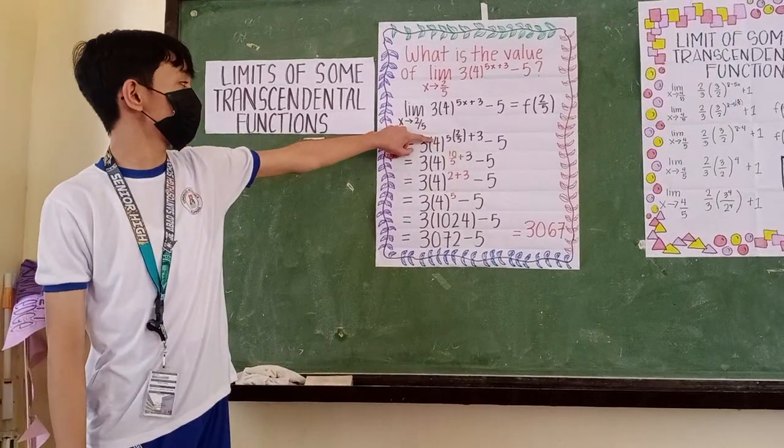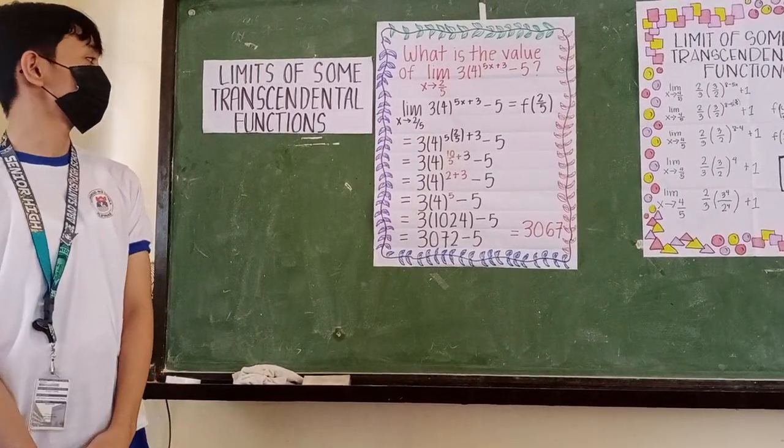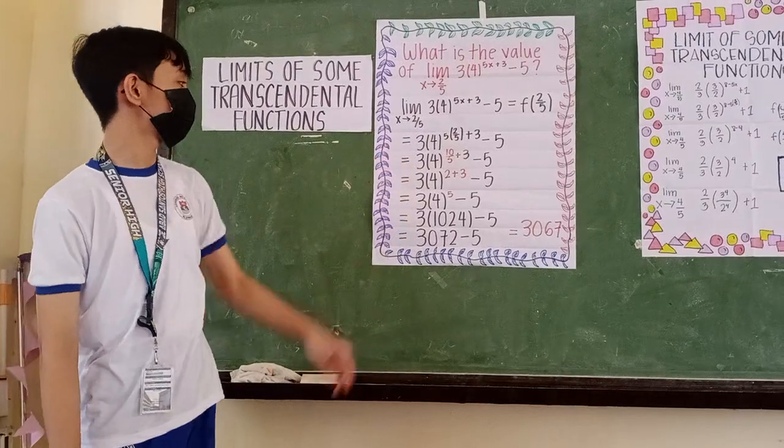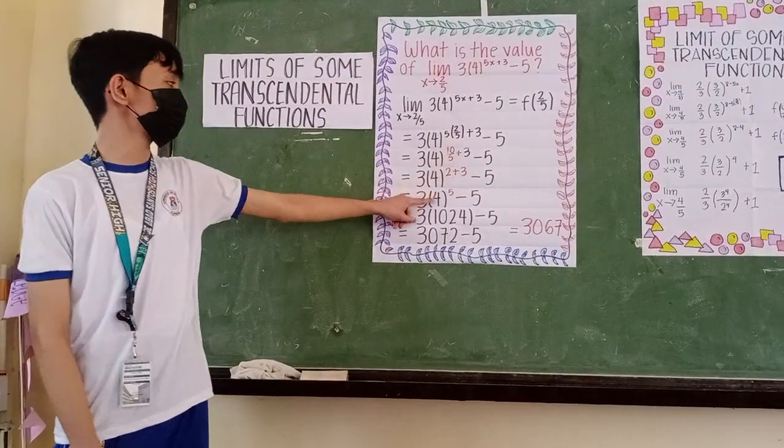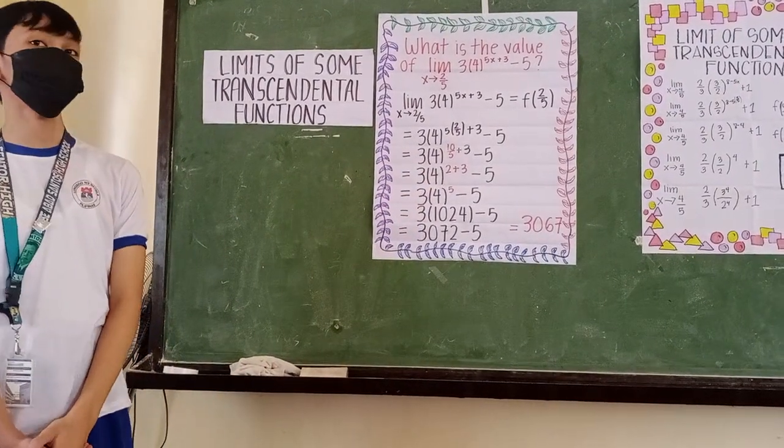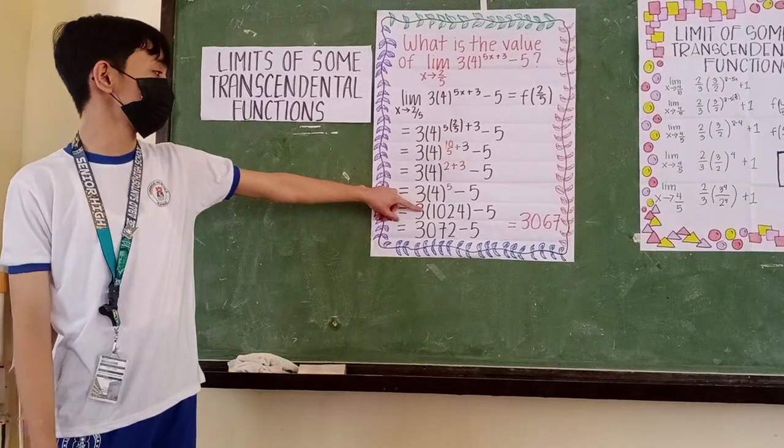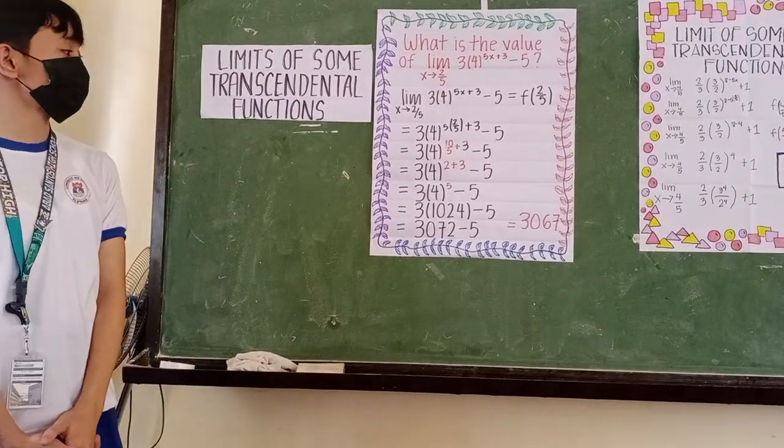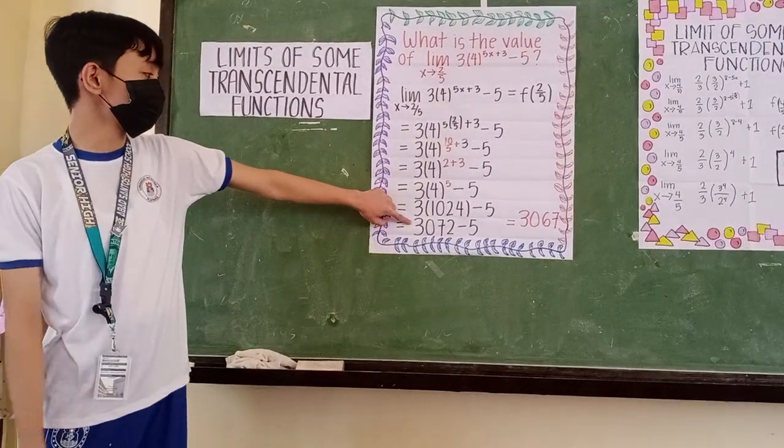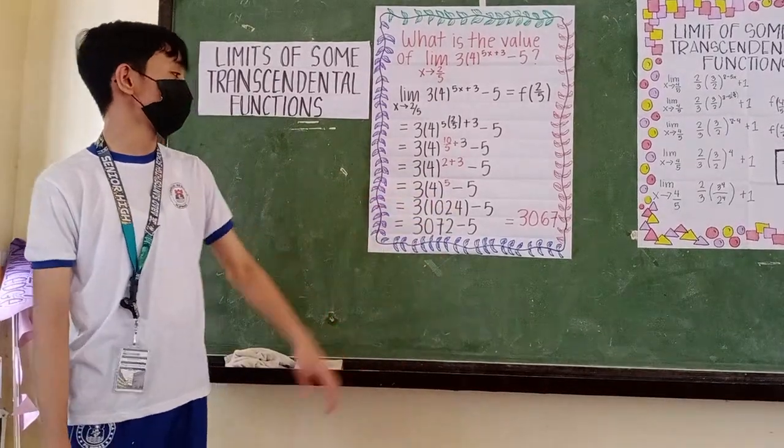5 times 2 over 5 is equal to 10 over 5 or equal to 2. 2 plus 3 is equal to 5. 4 raised to 5 is equal to 1024. 3 times 1,024 is equal to 3,072 and then minus 5.